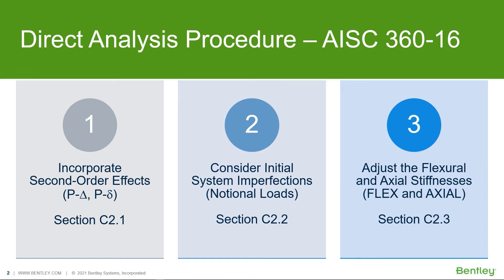The AISC 360-16 Chapter C describes the direct analysis method, which accounts for the second order effects resulting from deformation of the structure due to applied loading, imperfections, and reduced bending stiffness of members due to the presence of axial load. To incorporate the direct analysis method into STAAD Pro, we will incorporate second order effects including P-large delta and P-small delta effects, consider initial system imperfections through the use of notional loads, and adjust the flexural and axial stiffnesses of members using the direct analysis load definition.